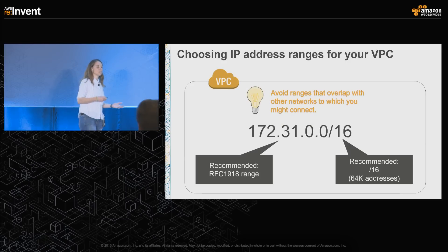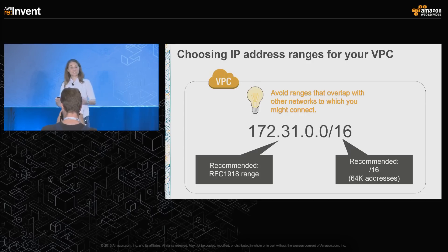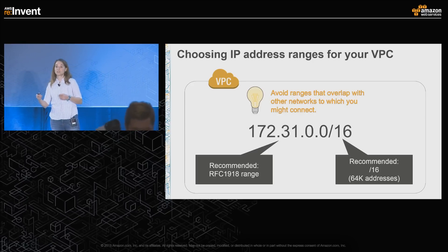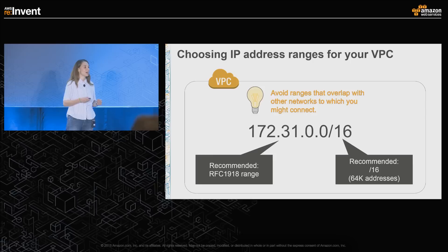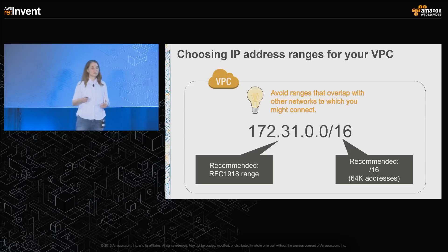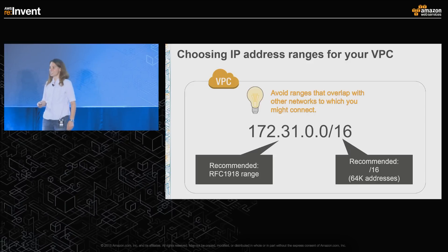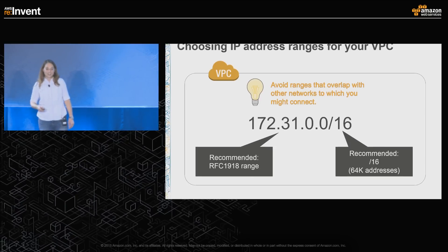The only thing you need to think about when choosing this address range is that you may decide you want to connect your VPC with other networks — like a corporate data center or another VPC. Your life will be a lot easier if you're trying to connect to another address range that you don't overlap with. So avoid overlapping with other networks you might be connecting with in the future, and we'll talk about those advanced connectivity scenarios later.